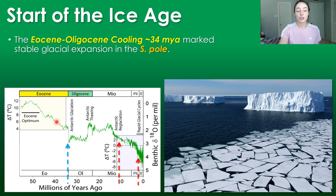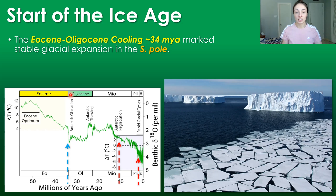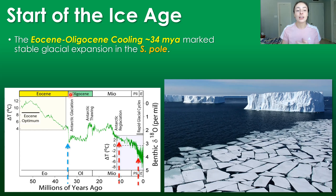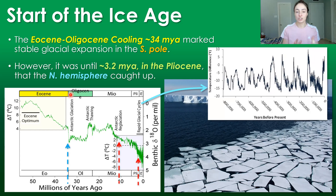where we have the sharp dip in temperature and Antarctic glaciation at the Eocene-Oligocene boundary, which marked the first time Antarctica was fully isolated tectonically as a continental mass. That allowed the waters around it to cool drastically and allowed the south polar region to cool and glaciation to expand in that area. However, the northern hemisphere didn't really catch up